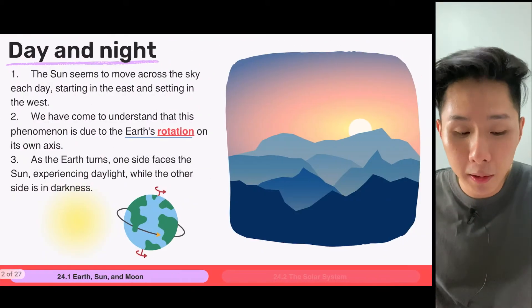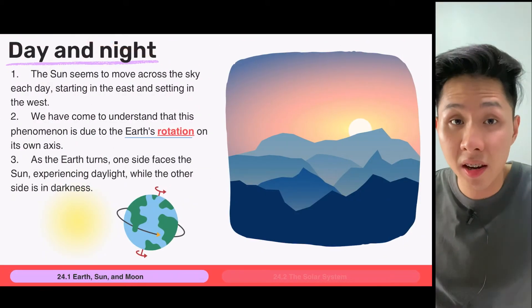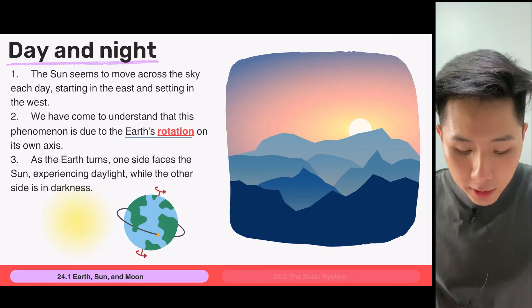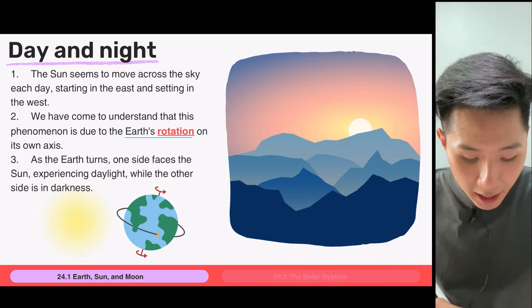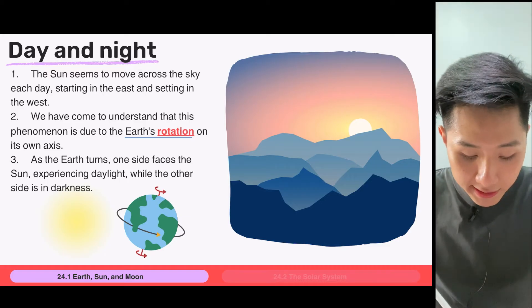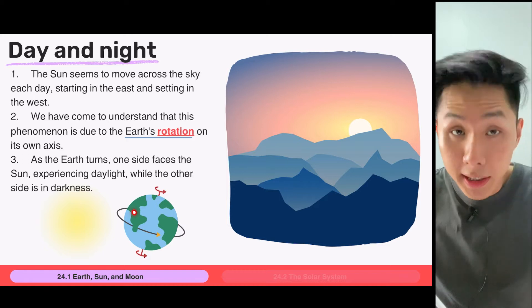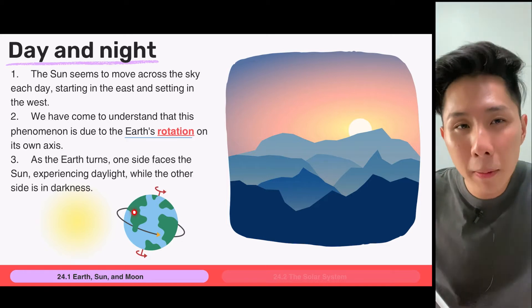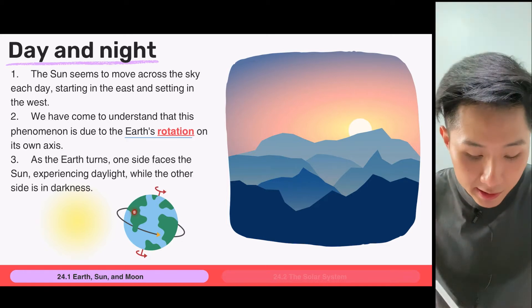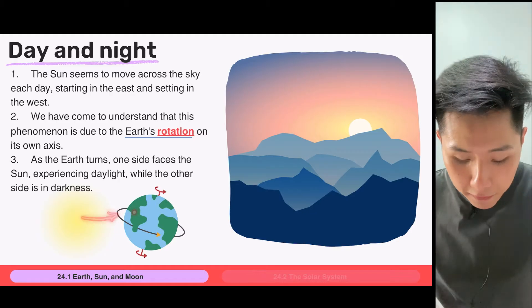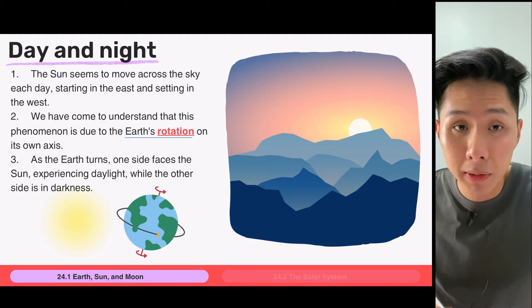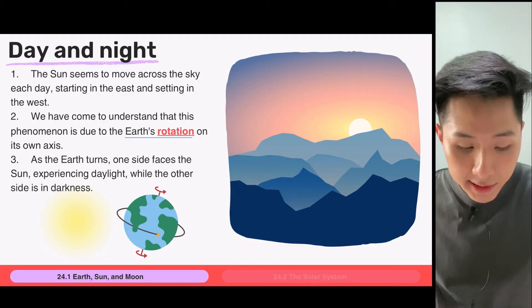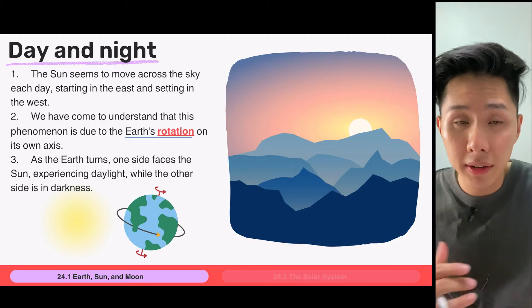The first part of the video, we'll be looking at why day and night occurs. And the reason this occurs is because of the Earth rotation on its own axis. And one way to picture this is that, let's say this is the Sun, and you are resident in this part of the Earth, then you probably will experience daytime because the Sun is shining on you. But if you're on the other side of the Earth, you probably will be experiencing nighttime because that's not where the Sun is shining. So that's how day and night occurs.